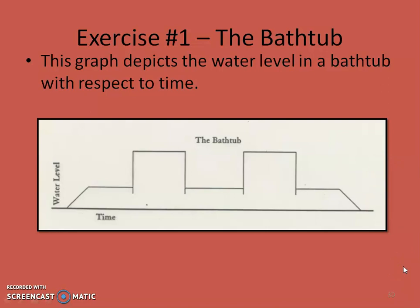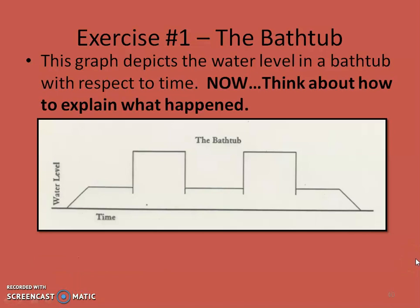The first one I call the bathtub. It says this graph depicts the water level in a bathtub with respect to time. My first question is: what's missing? Hopefully you'll look at this and think, well, I don't know — what are the water level units? What are the time units? Is this over the course of a whole day, a whole week, or the hour it takes to take a bath? We're not sure, so it's really important to note what's missing. The title we'll let go as 'the bathtub,' but it should really be your independent versus your dependent variable. Now pause the video and try to think about what would be going on with this water level over the course of time.